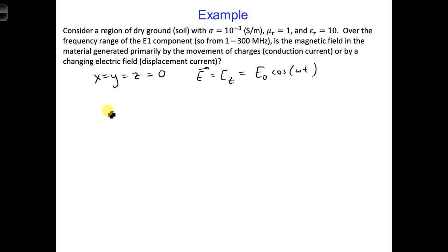Then we can say the conduction current density amplitude is sigma e_z. And the displacement current density is epsilon naught epsilon r d e_z d t.